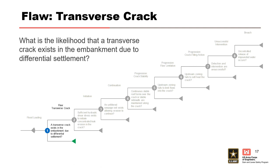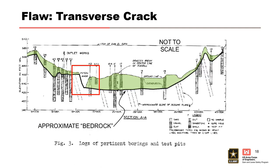Node 1: What is the likelihood that a transverse crack exists in the embankment due to differential settlement? A profile along the centerline of the dam looking upstream shows the originally interpreted top of rock surface. Some overburden was removed but most was left in place. The light gray angled dash lines depict the dip of the bedrock. The foundation profile in the red box will be examined more closely on the next slides.